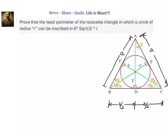Hello friends, welcome back. Let us look at this problem related to 12th grade maxima minima, applications of derivatives: prove that the least perimeter of the isosceles triangle in which a circle of radius R can be inscribed is 6√3·R. So we have to prove that the least perimeter of the isosceles triangle in which a circle of radius R can be inscribed is 6√3·R.